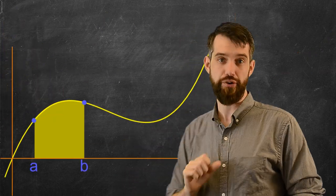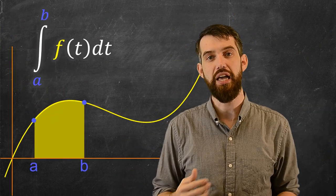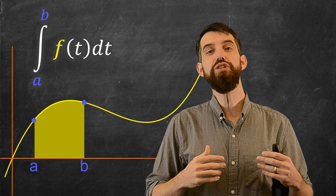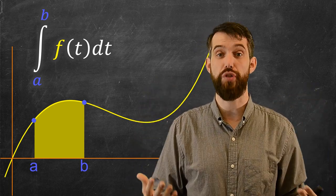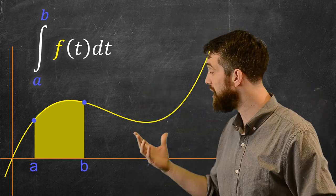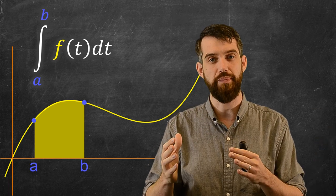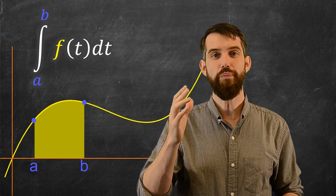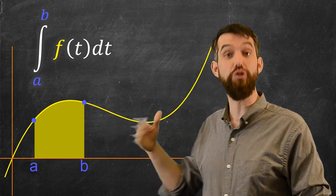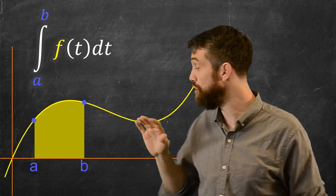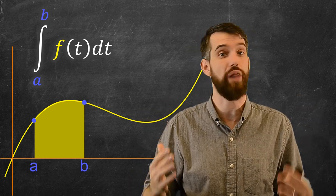This definite integral — the integral from a to b of f(t) dt — represents geometrically the area under the curve, the area above the interval from a to b. Now, this is a static thing; this is a number. If you gave me an a and a b, you would compute this and it would be some value like 7.